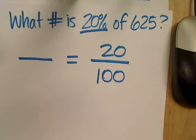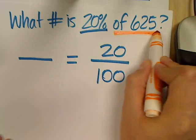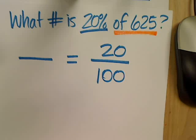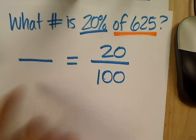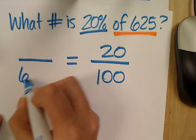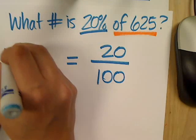Then I look at my question again, and it says, what number is 20% of 625? So, because it says of in front of it, that tells me it needs to go top or bottom? On the bottom. Because remember, it's is over of.